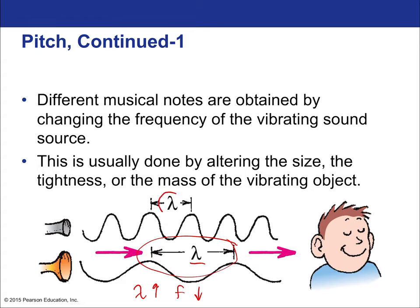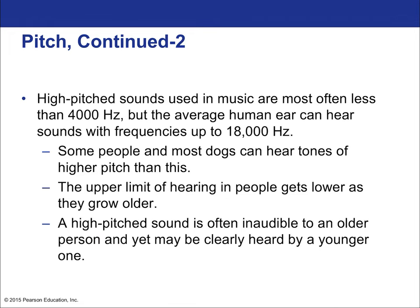When we have a shorter wavelength, that would be a larger frequency, which would be a higher pitch. So the narrow tube in this case is creating a higher pitch; the wider instrument, the wider tube, is creating the lower pitch. High pitch sounds in music are often less than 4,000 hertz, but the average human ear can hear sounds all the way up to 18,000.